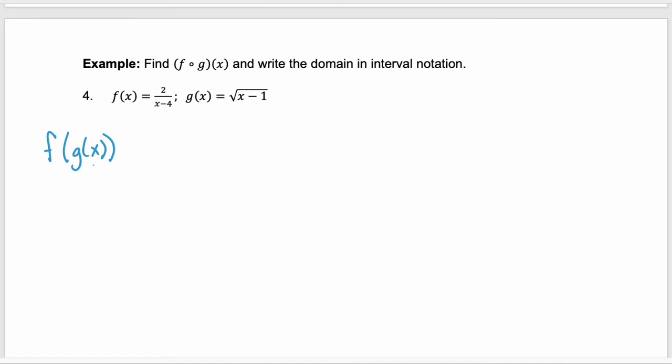I prefer the second notation better. It's easier for me to see that I'm taking the function g and substituting it into my function f. So we're taking our function g square root of x minus 1 and we're substituting it in for every x of our f function. So that composition is 2 over the square root of x minus 1 minus 4.